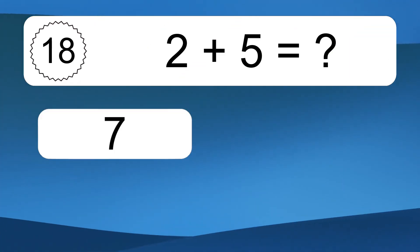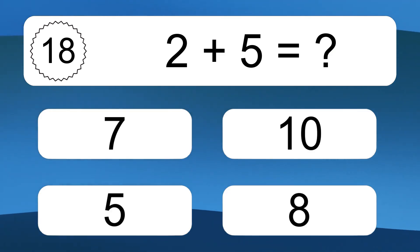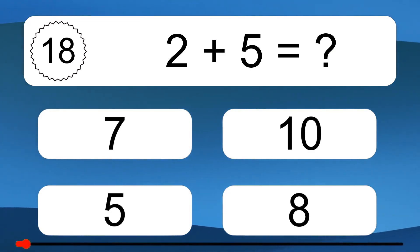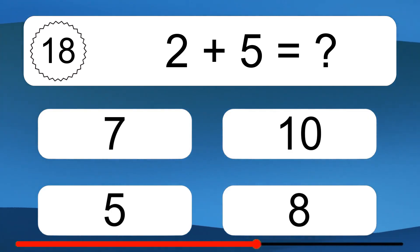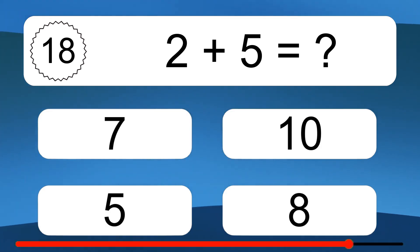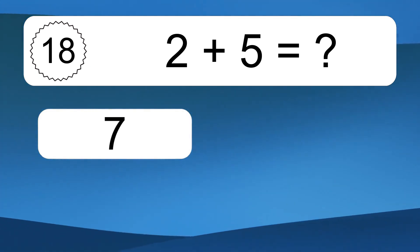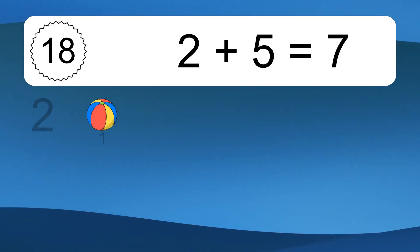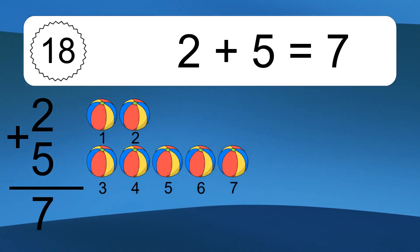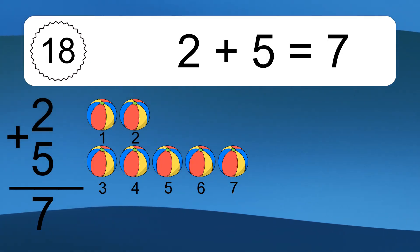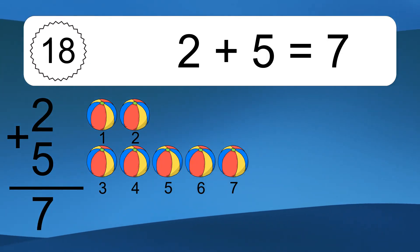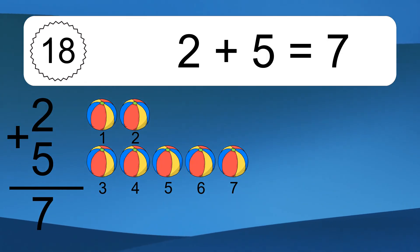2 plus 5 equals what? 2 plus 5 equals 7. Let's count it: 1, 2, 3, 4, 5, 6, 7.